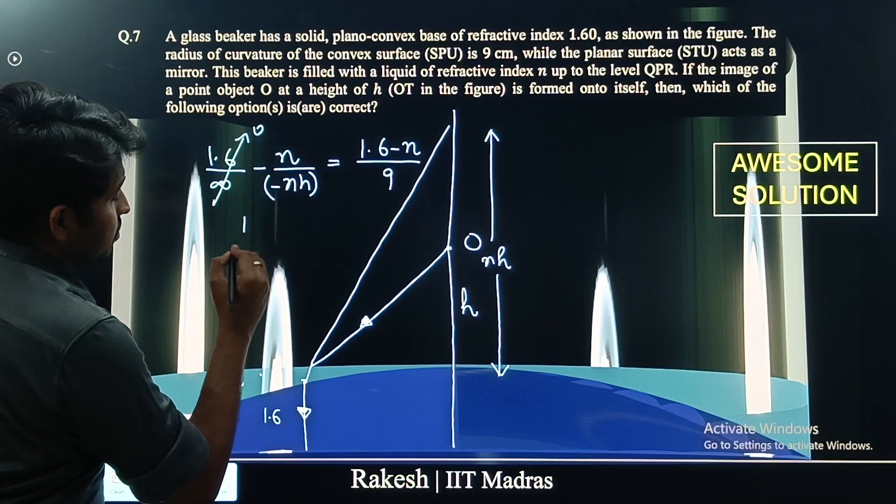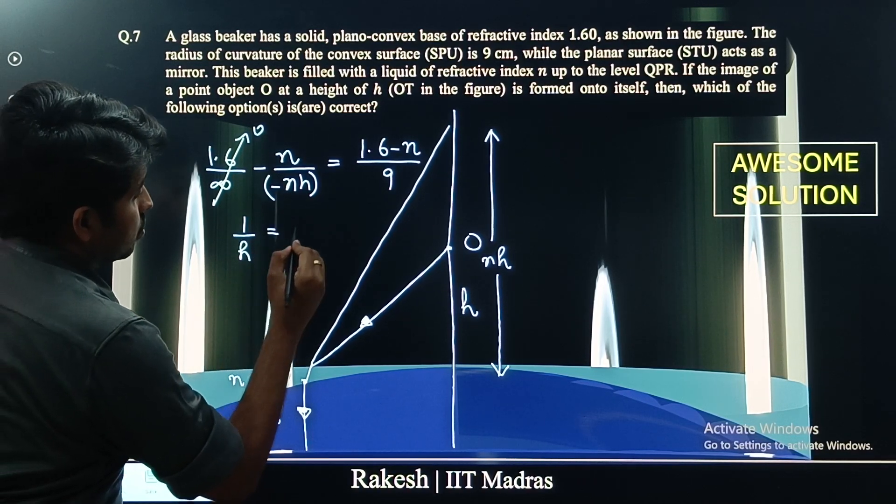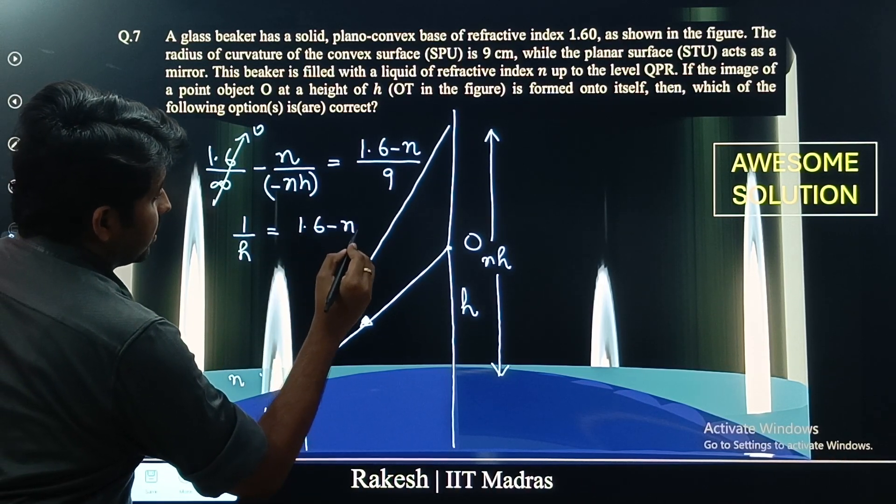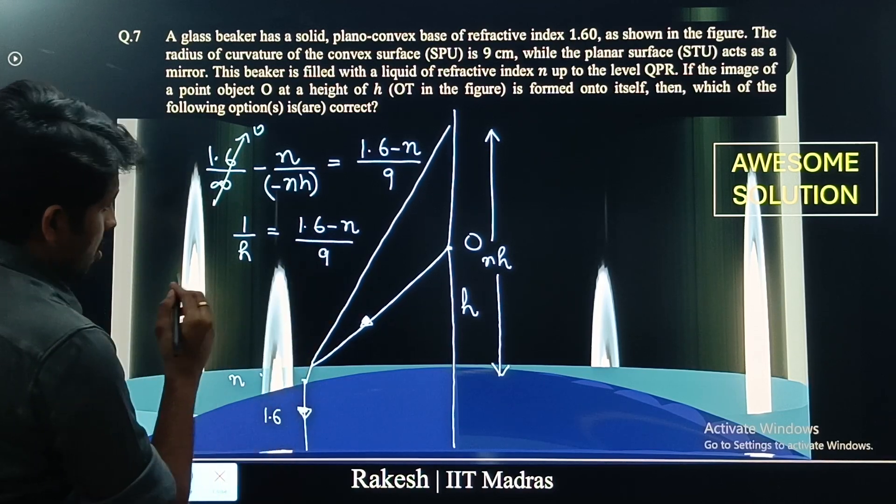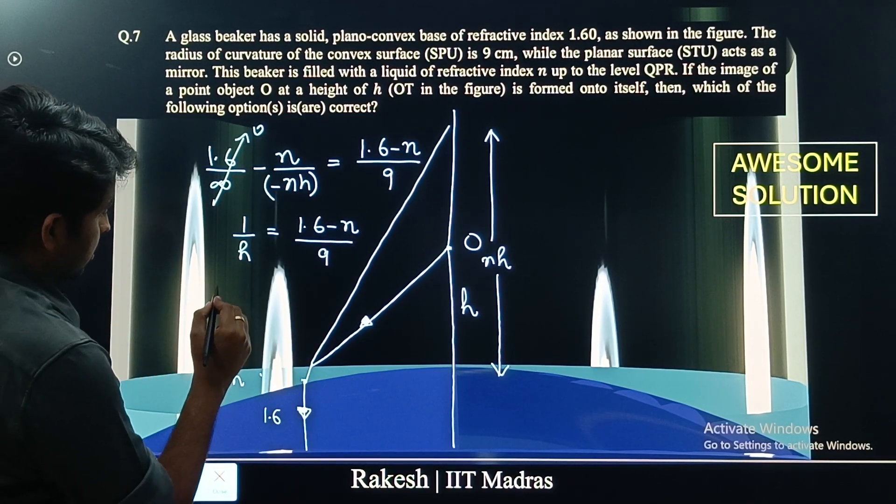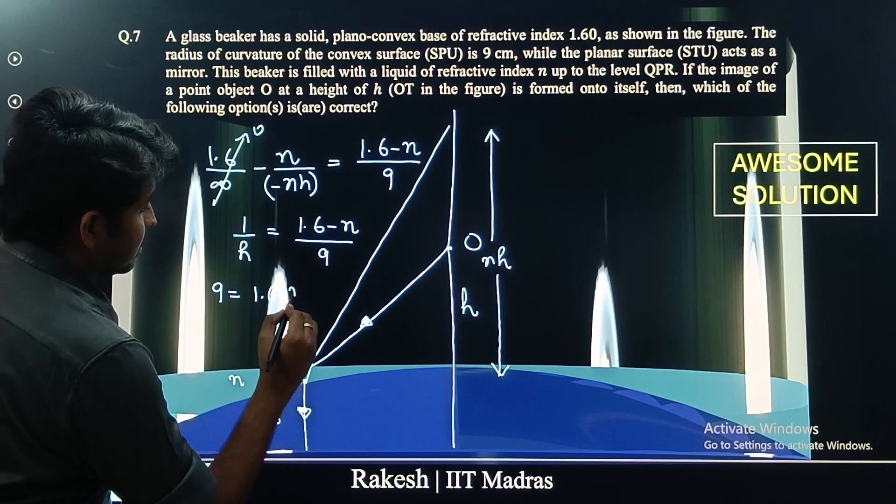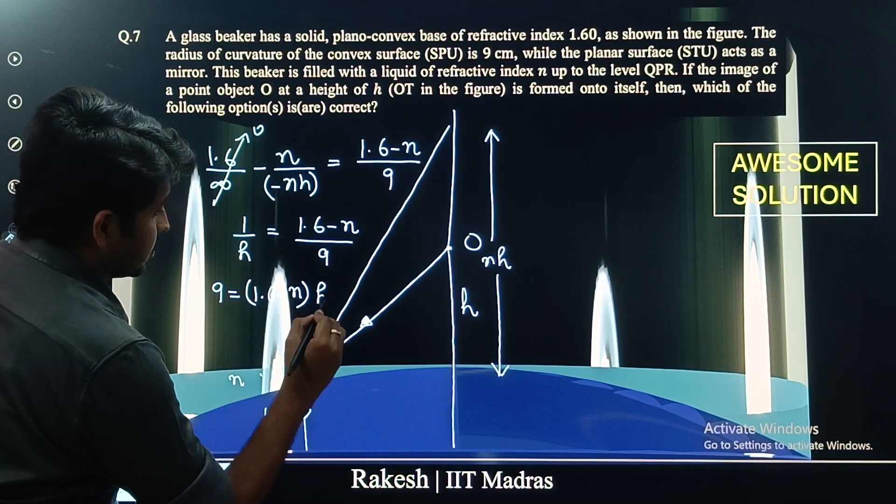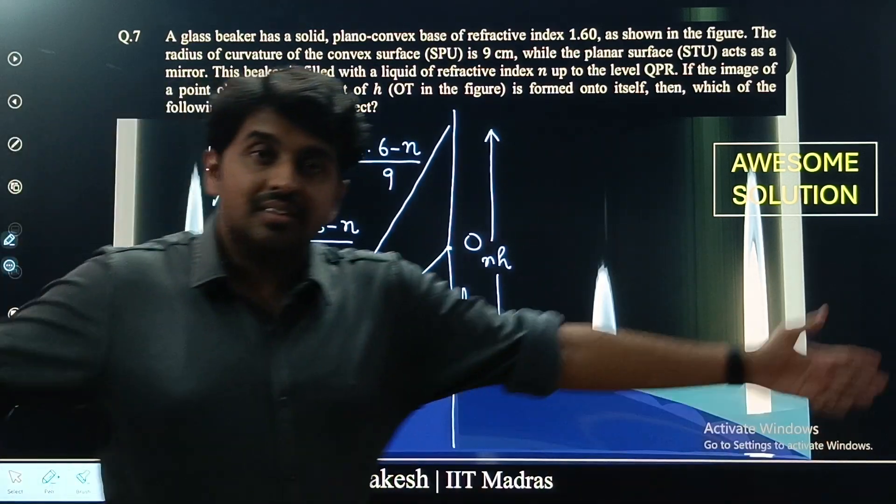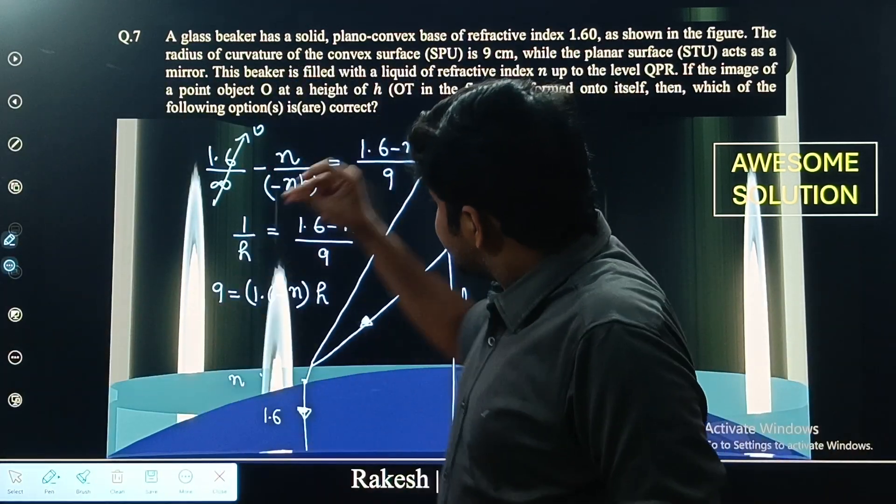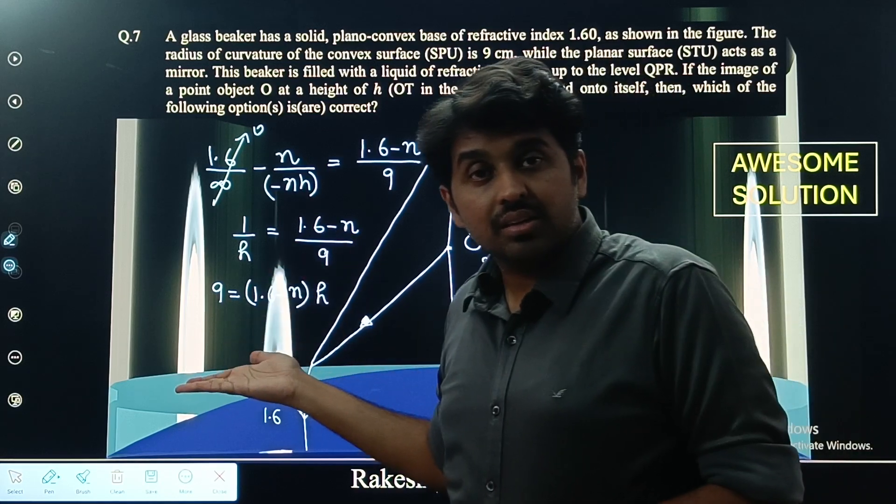This becomes 1 by h times h equals 1.6 minus n by 9, or 9 equals 1.6 minus n times h. That's it. In a single step we have got the solution.